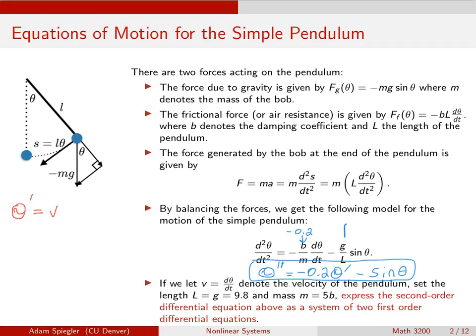then notice the second derivative of theta would therefore be the first derivative of V, right? Since the second derivative of theta is like the acceleration, and we can just write that as the derivative of the velocity. So now my second equation would be V' = -0.2θ'. So instead of θ', we just define θ' as V. And then we've got minus the sine of theta.